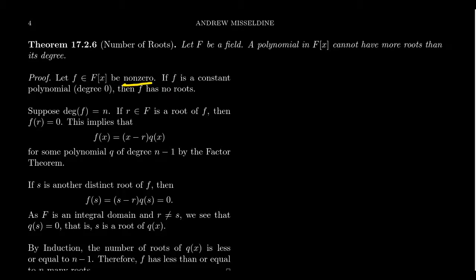Let me first consider the situation where f is a constant polynomial, a degree 0 polynomial. If f(x) is some constant, so it's going to look like f(x) equals c. If I evaluate that at some number r, you're still going to get c. And since this is not the 0 polynomial, f(r) is never equal to 0. It has no roots.